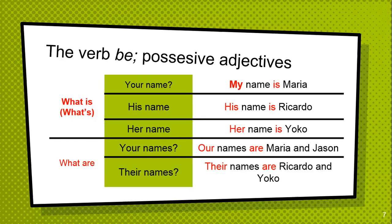If you remember, 'to be' consists of 'am', 'is', 'are' in the present. When they are in the past, you can use 'was' and 'were'.